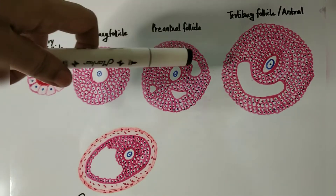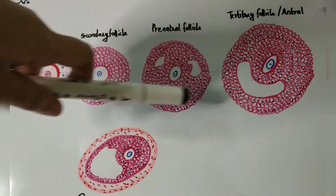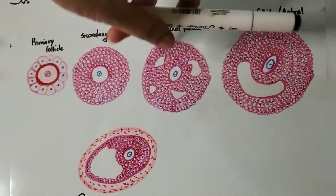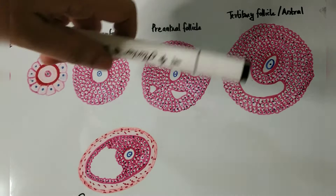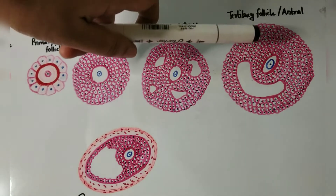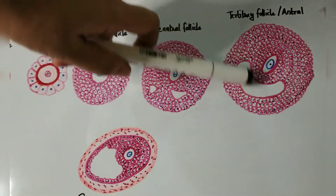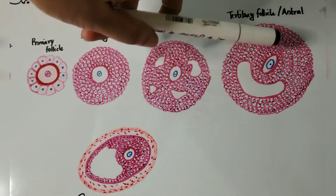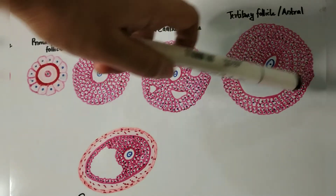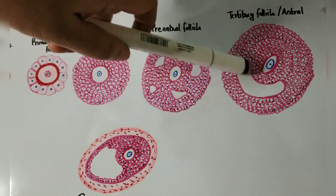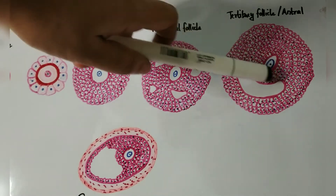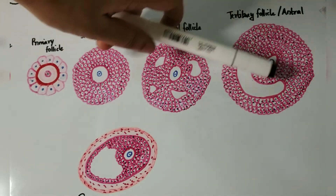Later, the fluid-filled spaces combine to form a single follicular antrum, and the granulosa cells surrounding the primary oocyte are pushed to one side. In a tertiary or antral follicle, the fluid-filled spaces combine to form the follicular antrum and the granulosa cells surrounding the primary oocyte are pushed to one side.